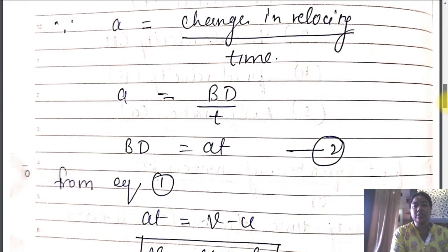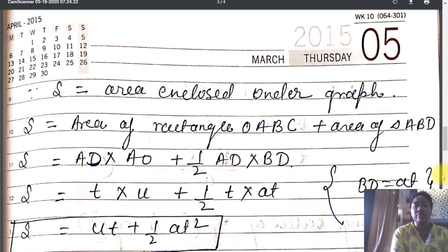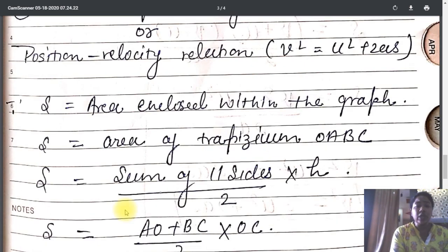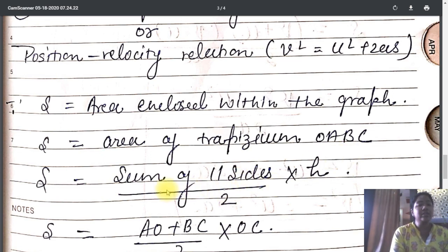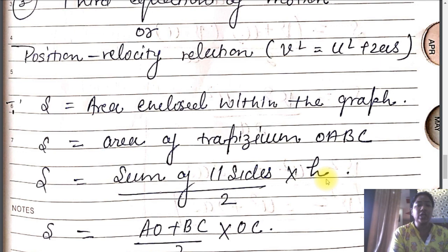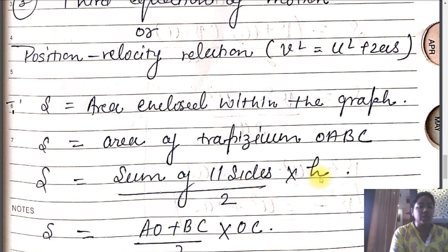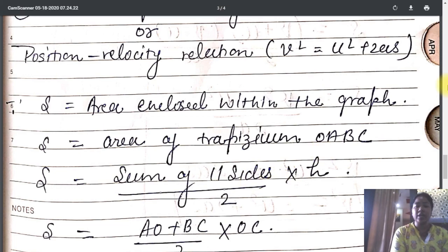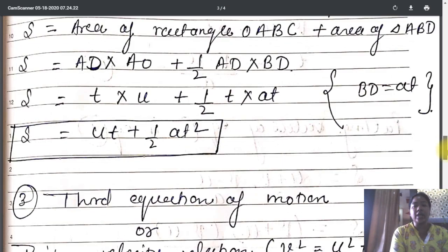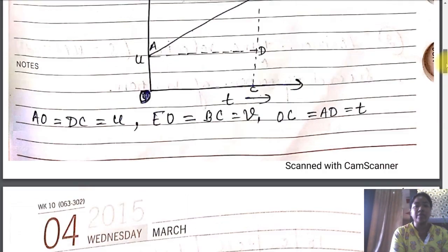The area of the trapezium equals the sum of the parallel sides divided by 2, multiplied by the height. Always remember this formula: sum of the parallel sides divided by 2, times height. From the diagram, we identify the parallel sides and the height.